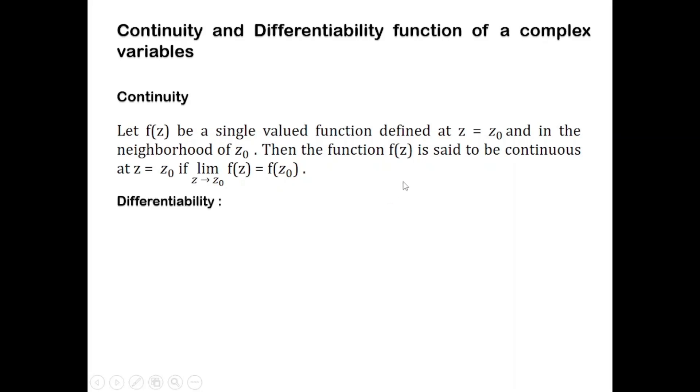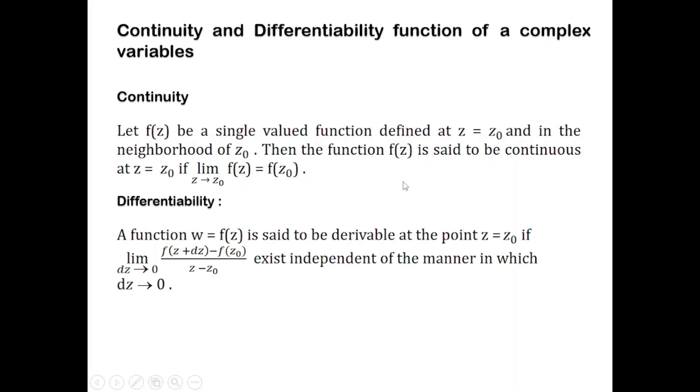And we say that the function of a complex variable is differentiable at point z = z₀ if the limit of [f(z + dz) - f(z₀)] / (z - z₀) as dz tends to zero exists.